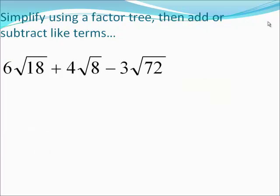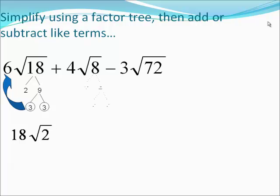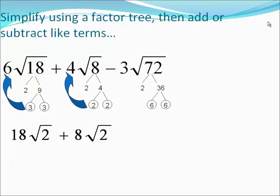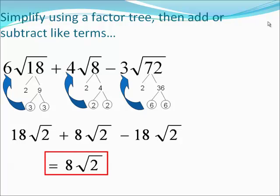If at first your roots are not the same, you cannot add and subtract them. However, it is possible to break down numbers in factor trees so that they will be able to add or subtract together. When we break down √18: two times nine, and nine breaks down into three times three — a group of threes comes out and multiplies by the six out there, making 18√2. When you break down √8: two times four, four breaks down into two times two — a group of twos comes out and multiplies by the four to make 8√2, with two left over inside. When you break down √72, a group of sixes comes out and multiplies by the three to leave two inside. Now all three terms are like terms: 18√2 plus 8√2 minus 18√2 gives a total of 8√2.